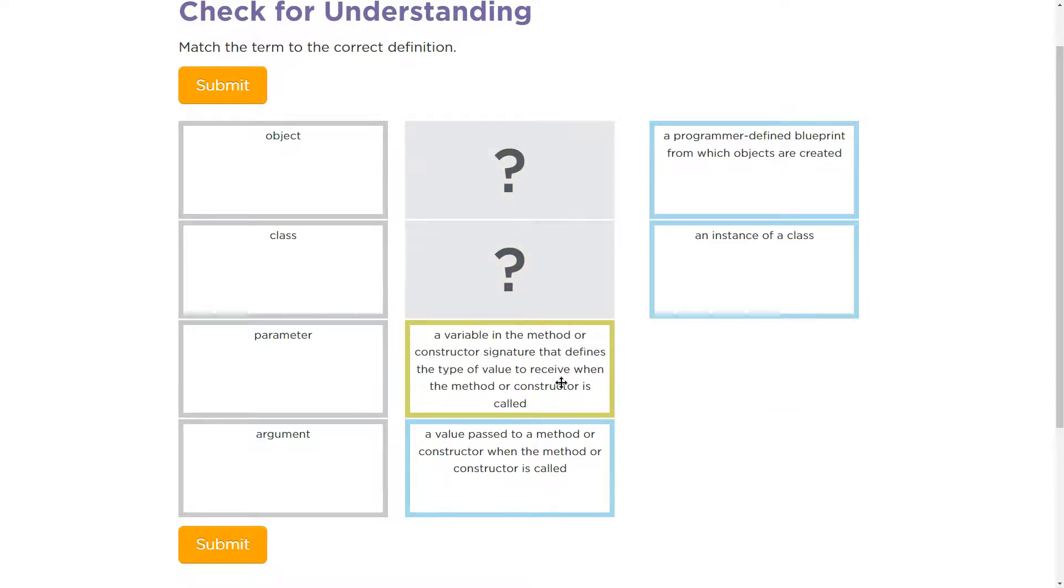All right, so a variable in a method or constructor signature that defines the type of value to receive when the method or the constructor is called. Yep, the distinction here is this is where, so argument, when we write my painter.paint, I don't know, parentheses, and then in quote, blue, that's an argument. When we write some code, such as public void make paint, and then in the parentheses, we say string paint color, that's a parameter, and we'll see more of this.